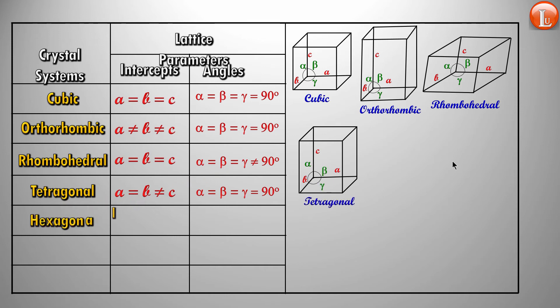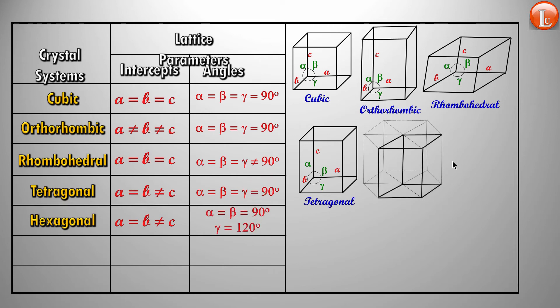The next is hexagonal. Two sides are equal but not equal to the third — just like tetragonal. However, two angles are 90 degrees and one is 120 degrees. So A equals B, not equal to C; alpha is 90, beta is 90, and gamma is 120. That's hexagonal for you.